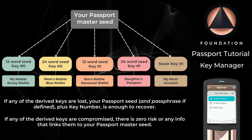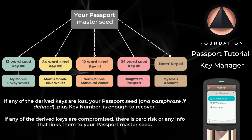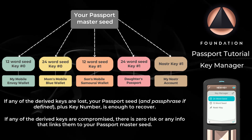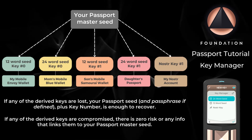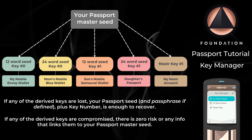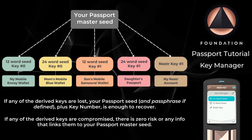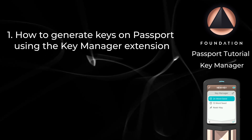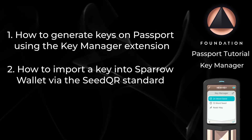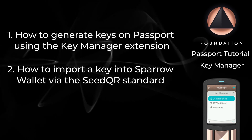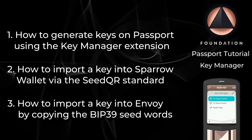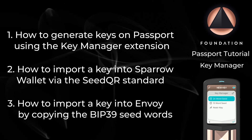For the remainder of this video I'll be covering only Bitcoin child seeds. This video assumes that you've already got your Passport initiated and updated to at least firmware version 2.1.0. If you haven't, check out our other videos on how you can do that. I'm going to break this video down into three sections: the first is how to generate keys on Passport; the second will be how to import one of your generated keys into Sparrow Wallet via the QR code standard; and the third will cover how to import a generated key into Envoy to be used as your mobile wallet seed.